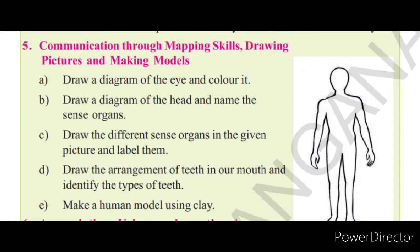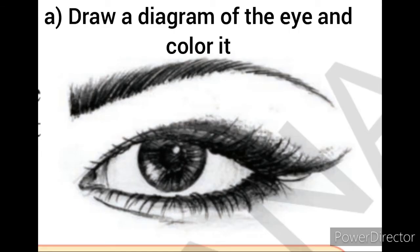Drawing pictures and making models. Activity A: draw a diagram of the eye and color it. We have already seen the eye diagram, so draw this diagram and color it nicely.